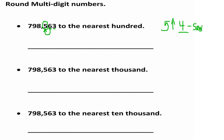That's a quick strategy to use whenever you're rounding. We see that the number in the tens place is 6, and since it is 5 or more, we're going to round up — we move the hundreds digit up by 1, and it becomes 6.